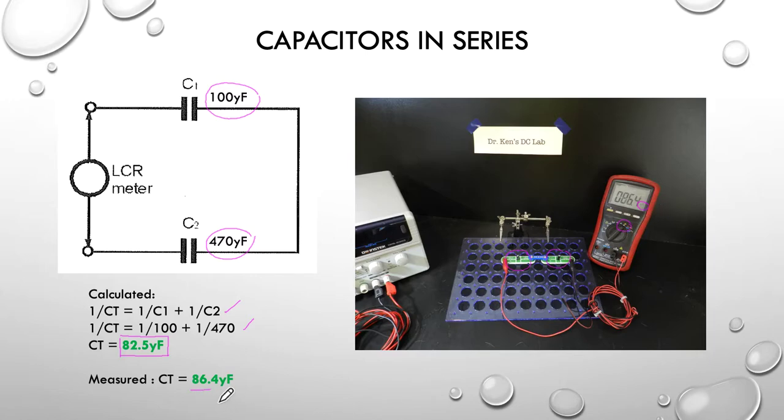So, we're measuring 86.4, we calculated 82.5 and my capacitors were plus and minus 10%. Allowing for a bit of fluctuation in the accuracy of my meter and in the value of the capacitors, spot on. We've demonstrated quite clearly that capacitors connected in series, you have to add up the inversions to get the value of capacitance.